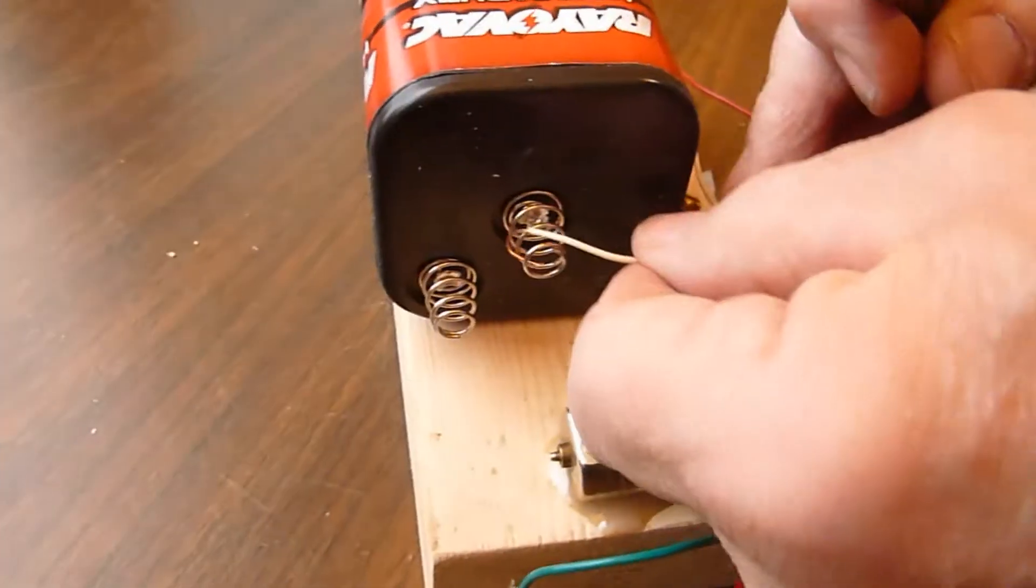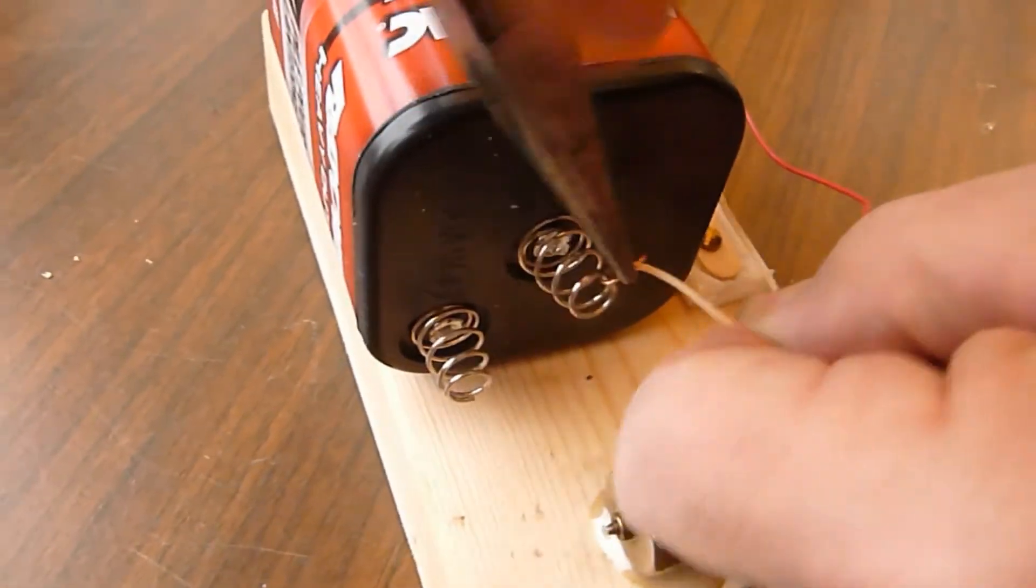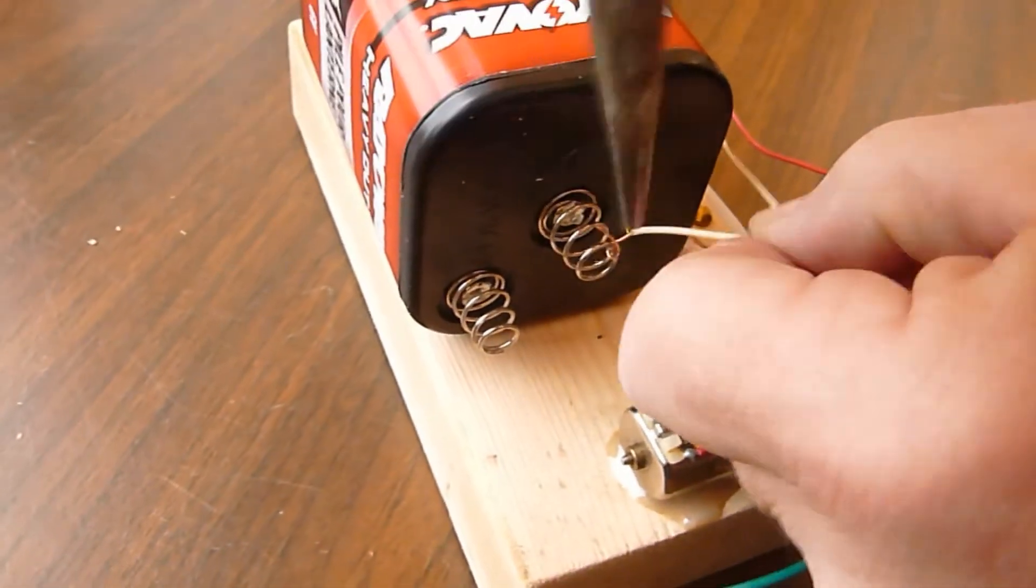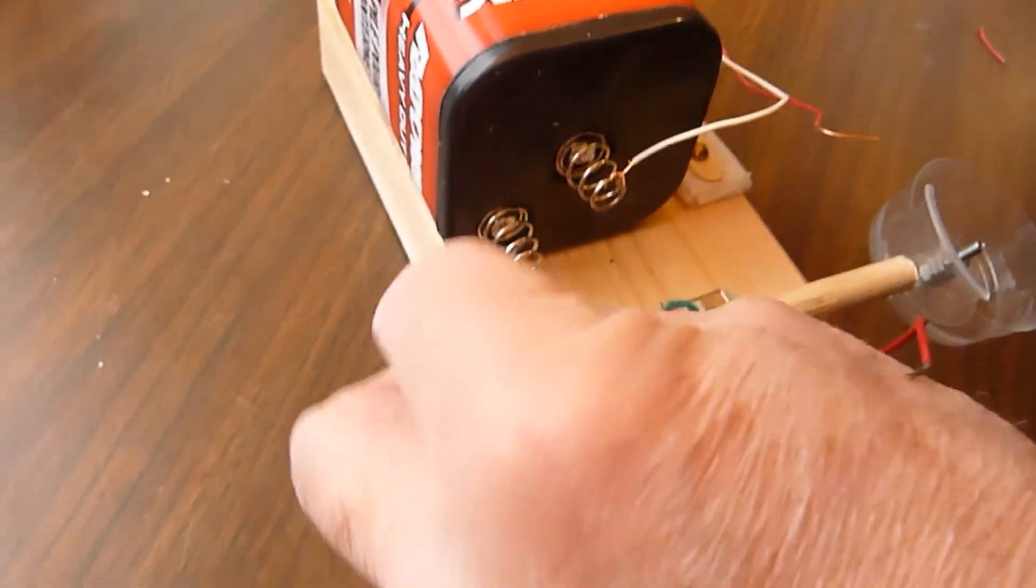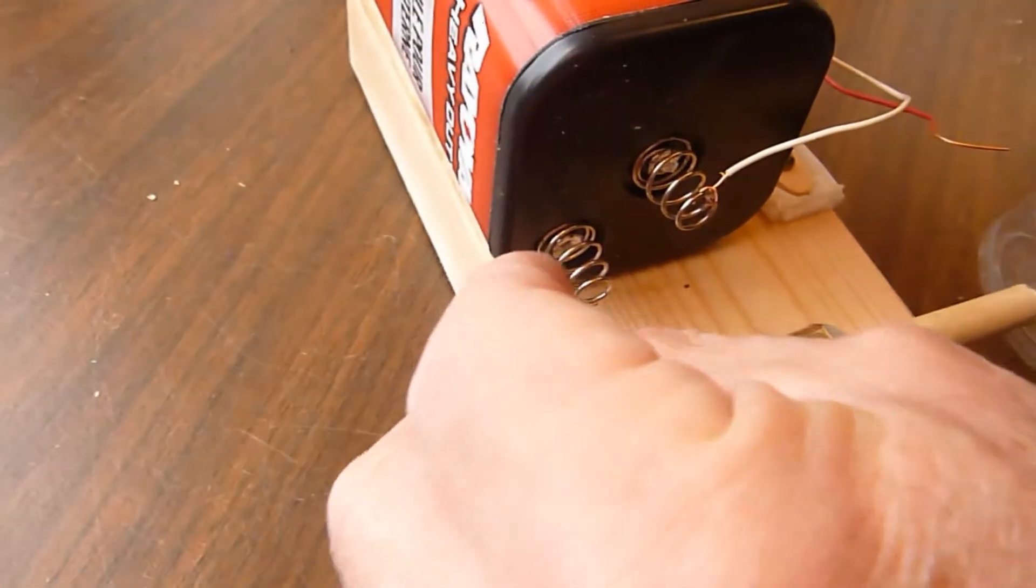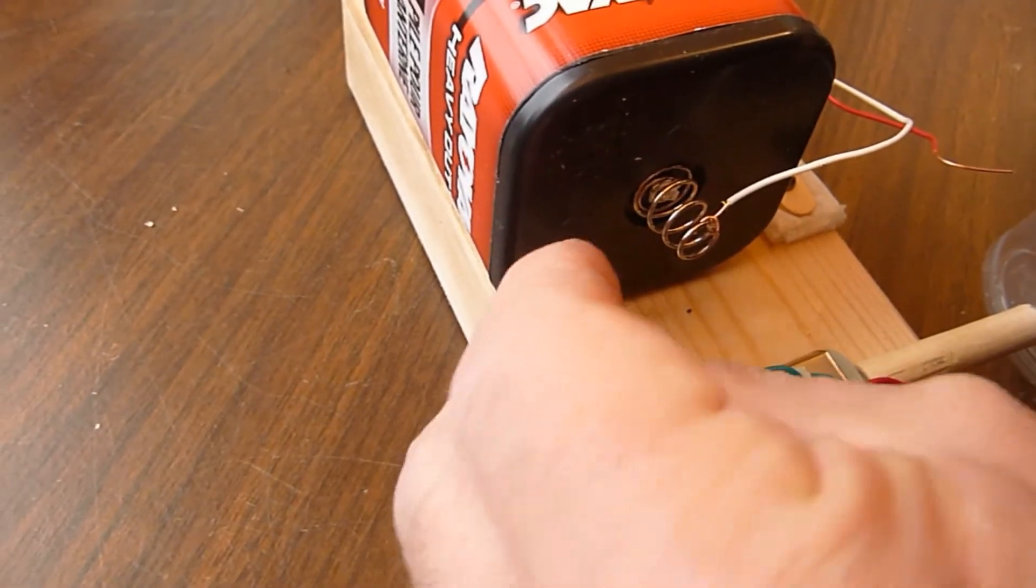The final step is the wiring. Here we wire one of the connections to the popsicle stick switch to one of the terminals of the battery. Then we wire one of the wires that comes from the electric motor to the other terminal of the battery.